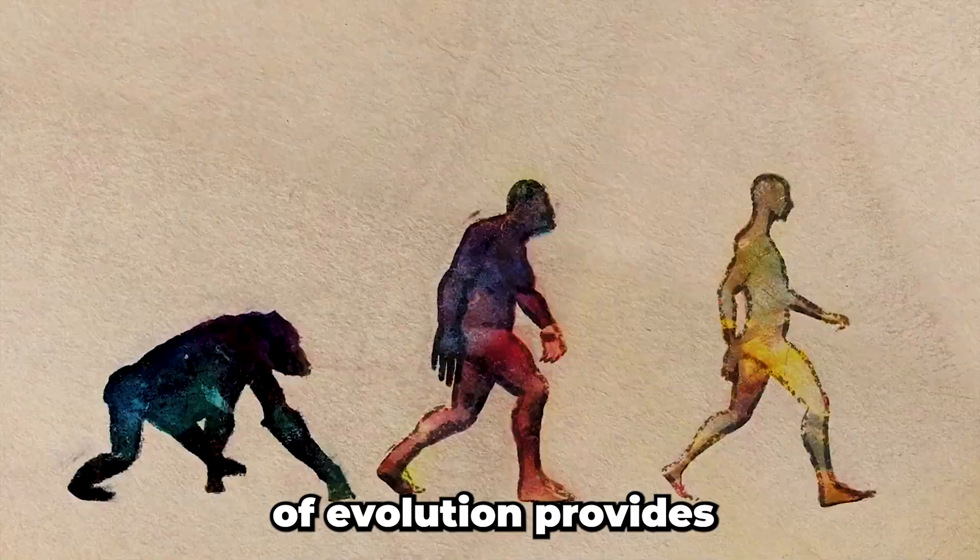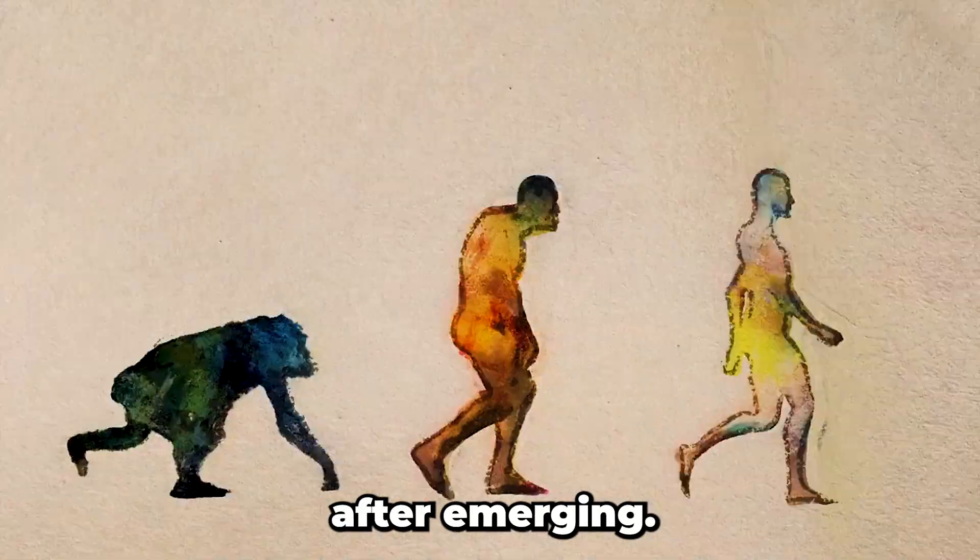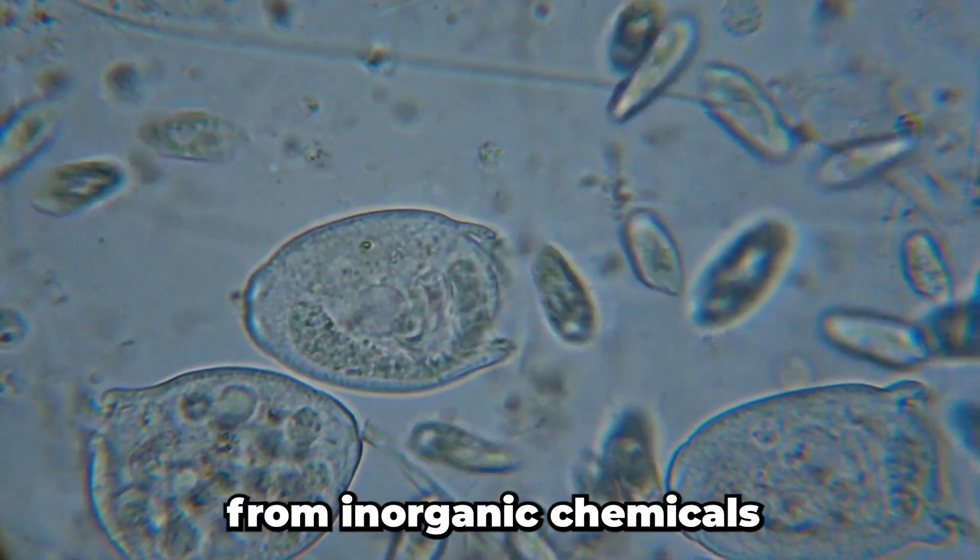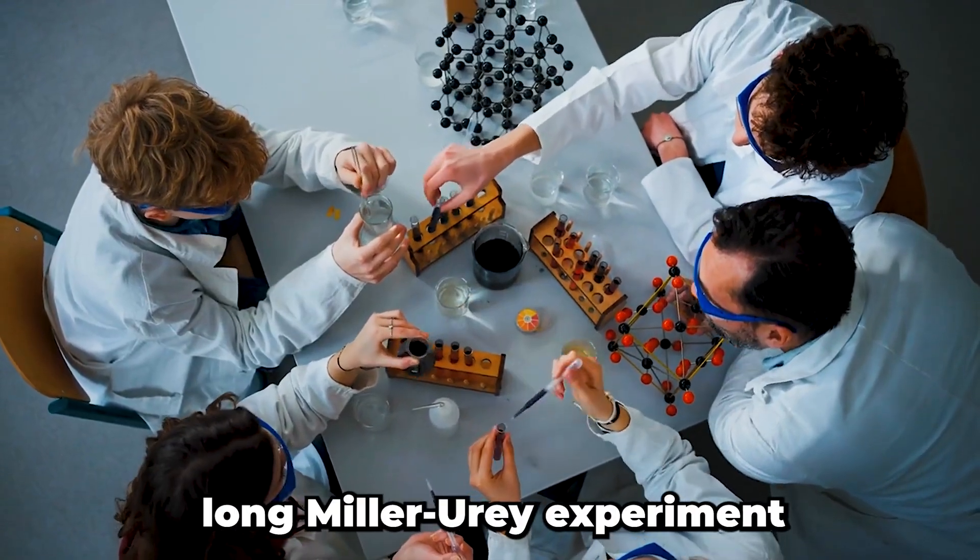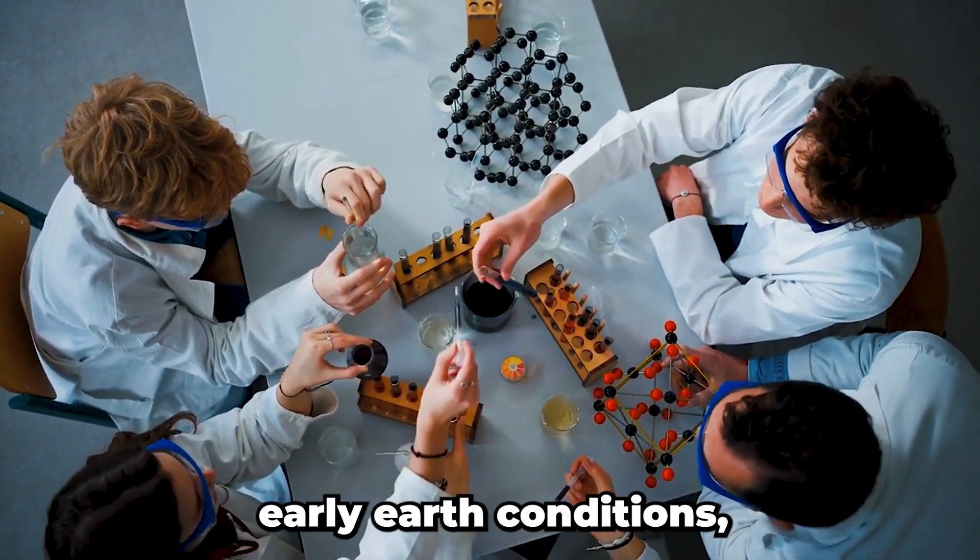Darwin's theory of evolution provides a robust model for how life diversified into millions of species after emerging. But how the first single-celled organisms arose from inorganic chemicals is still unknown. The decades-long Miller-Urey experiment showed some amino acids form under simulated early Earth conditions.